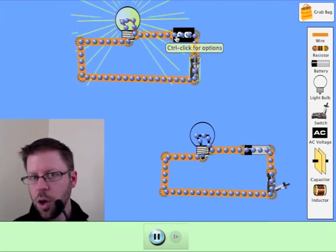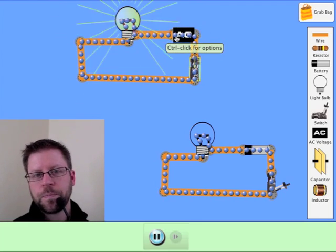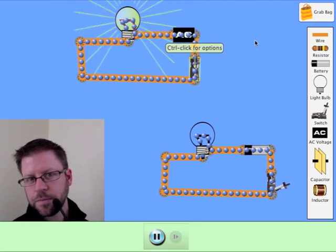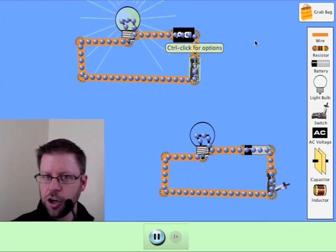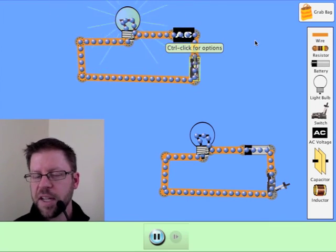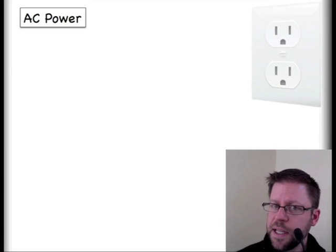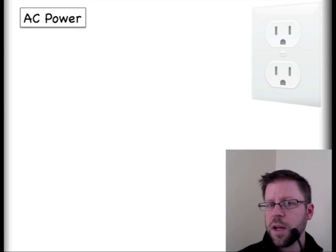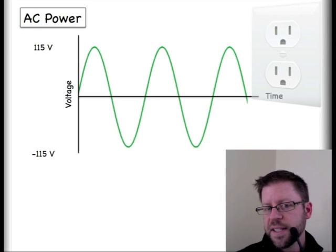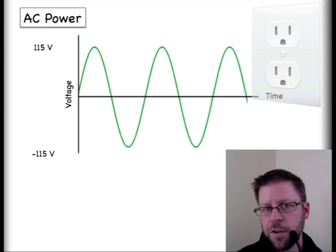But to cause them to go back and forth, you still need a voltage. So an alternating current, an AC circuit, must have a changing voltage. So here we are on AC power, the thing that's in our wall socket. We have this idea that I already brought up where the voltage is back and forth, back and forth, back and forth.